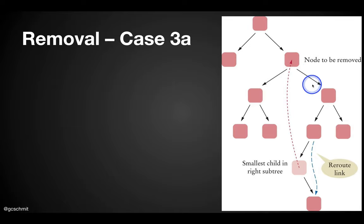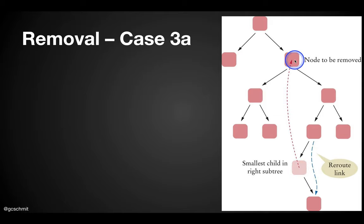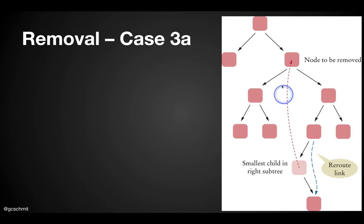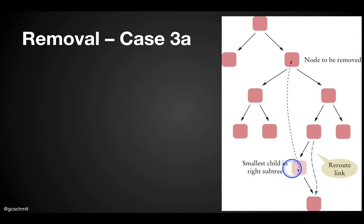The reason why is if we find the least child — so we look through this and here's the least child in the right subtree (we'll talk about how we find that in a second) — if we were to put this up here, the tree still works because everything remaining in the right subtree is greater than the least child of the right subtree, and everything in the left subtree already has to be less than that child because it was in the right subtree. So we have to find the least child in the right subtree and put it up here instead.